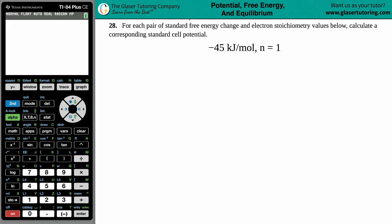Number 28: For each pair of standard free energy change and electron stoichiometry values below, calculate a corresponding standard cell potential. We have two values: negative 45 kilojoules per mole and an n of one.